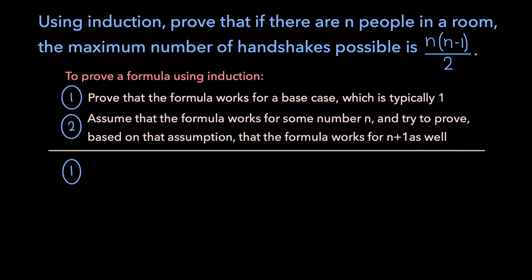So if we apply induction to this particular problem, we first need to show that the formula for the number of handshakes works for some base case. When there's only one person in the room, the maximum number of handshakes possible, which I'll abbreviate as N_H, is 0.